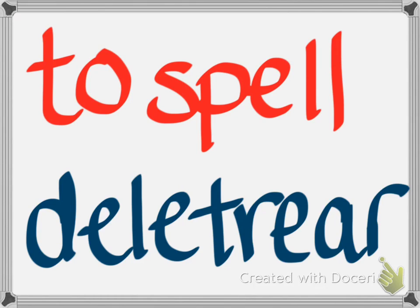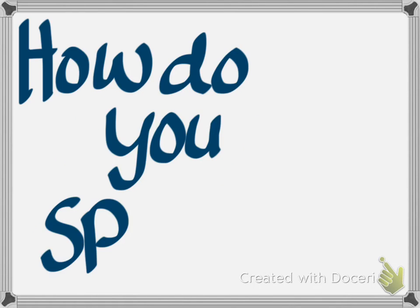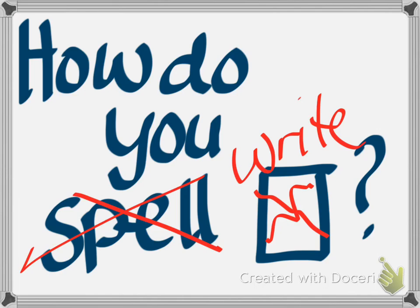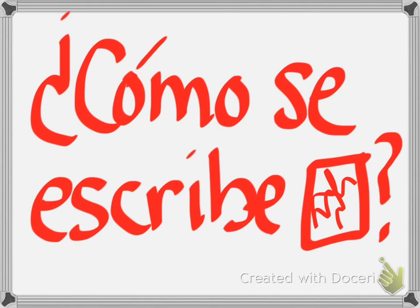One other thing to remember: even though the verb 'to spell' is 'deletrear' in Spanish, you don't ask somebody how to 'deletrear' something. Rather, the expression we use in Spanish — if we want to say 'how do you spell something' — you actually say 'how do you write something?' And it sounds like: '¿Cómo se escribe?' So let's practice with some really common words.